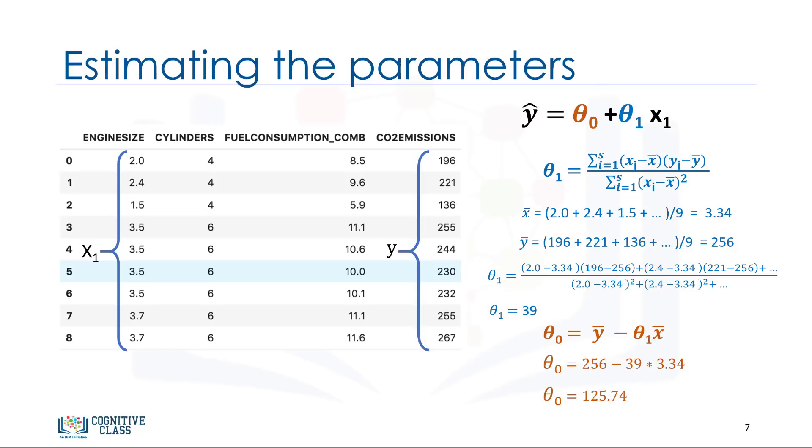As a side note, you really don't need to remember the formula for calculating these parameters, as most of the libraries used for machine learning in Python, R, and Scala can easily find these parameters for you, but it is always good to understand how it works. Now, we can write down the polynomial of the line. So, we know how to find the best fit for our data and its equation. Now, the question is, how can we use it to predict the emission of a new car based on its engine size?